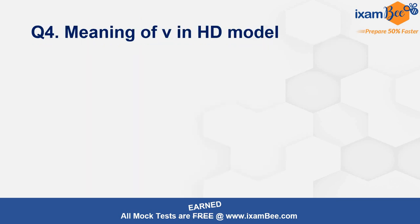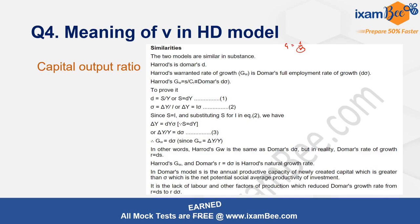There was also a question asking the meaning of 'v' in the Harrod-Domar equation, where the growth rate is given by s divided by v. This was straightforward — v is the capital-output ratio, covered in our notes.